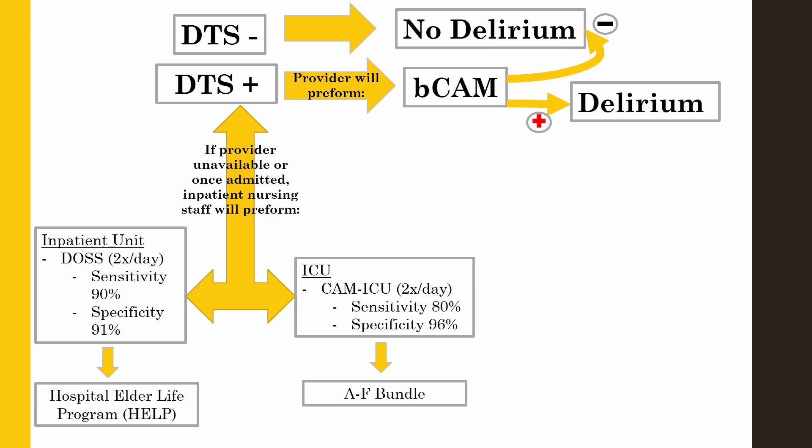If a patient is DTS positive, it will be documented in EPIC to inform providers so that they can perform the BCAM. But what if the provider is unavailable to perform the BCAM, or what happens once the patient is admitted? Inpatient nursing staff will perform either the DOS — Delirium Observation Screening scale — or the CAM-ICU. These assessments will be done regardless of the DTS results. The DOS and the CAM-ICU are two other delirium screening tools that can be used to diagnose delirium. Because the sensitivity and specificity of both are so high, if delirium is detected from either assessment, the patient can be diagnosed with delirium without further evaluation by a physician. Furthermore, if the patient is determined to have delirium, they may be connected to a program such as the Hospital Elder Life Program, HELP, or the ABCDEF bundle to ensure that they receive proper care.